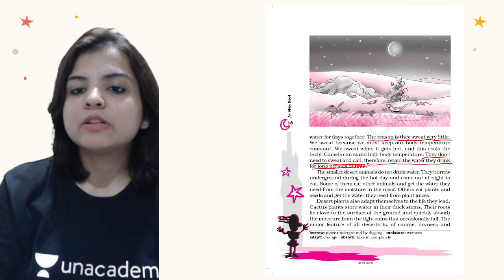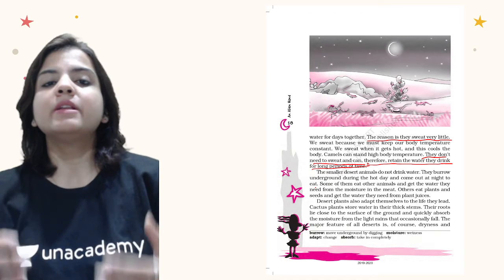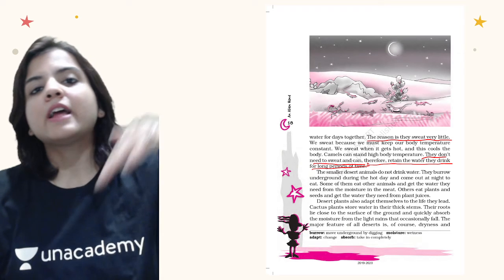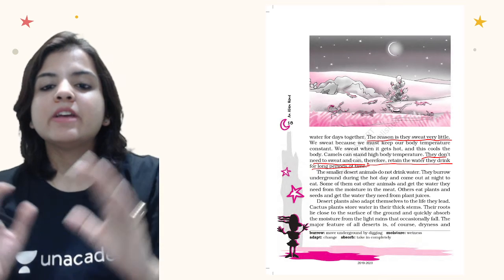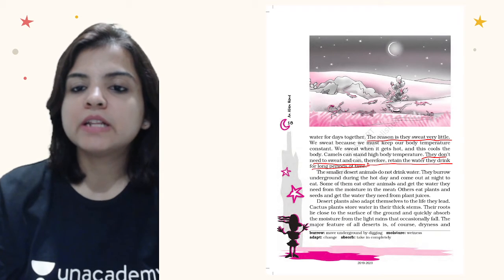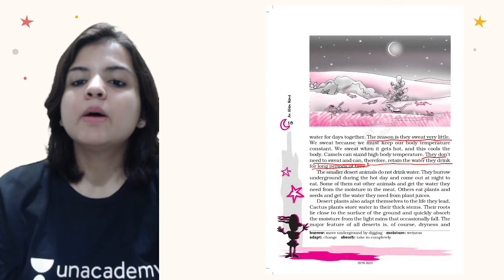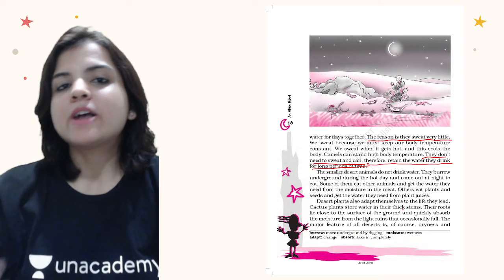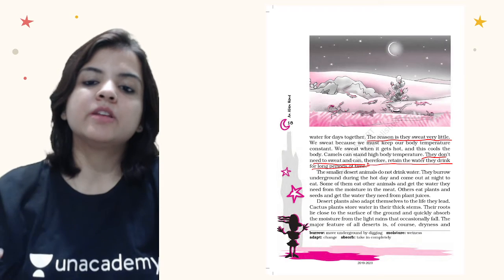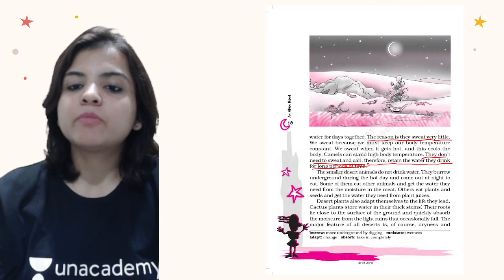Smaller desert animals do not drink water — they burrow underground, digging holes like small tunnels and living inside those burrows. During the hard summer day they come out at night to eat. Some of them eat other animals and get the water they need from the moisture in the meat. Others eat seeds and get water from plant juices.